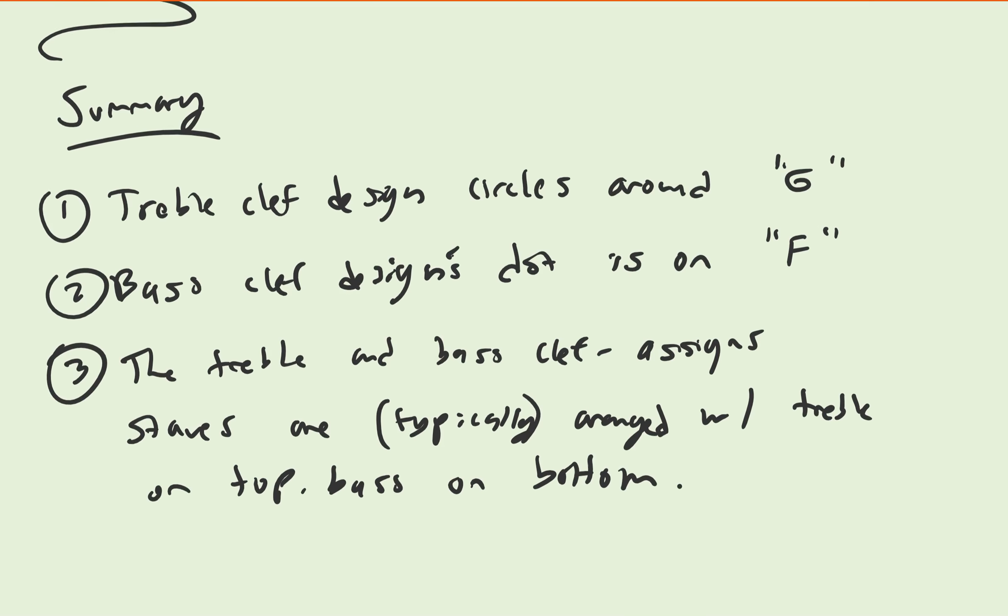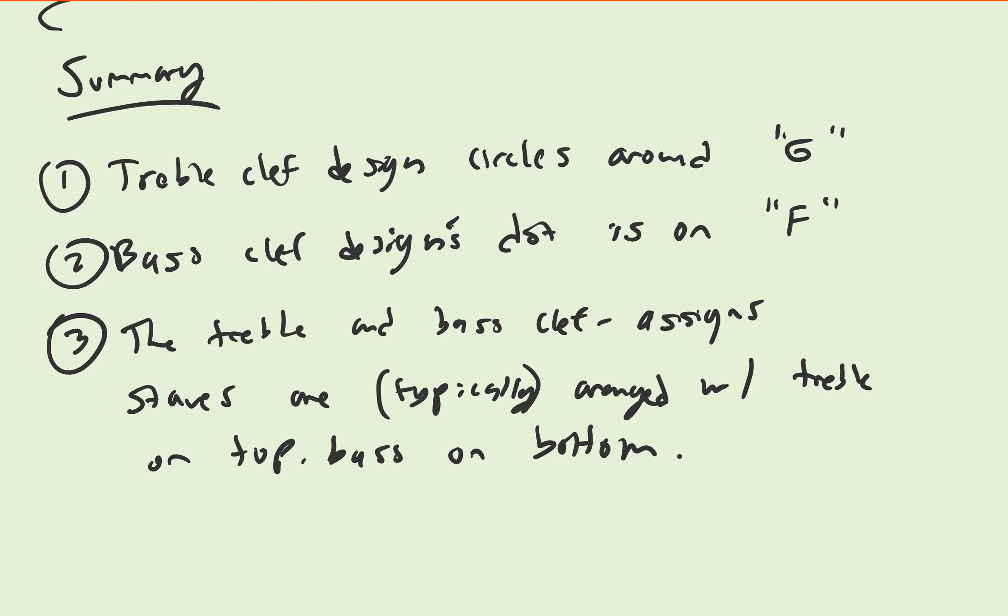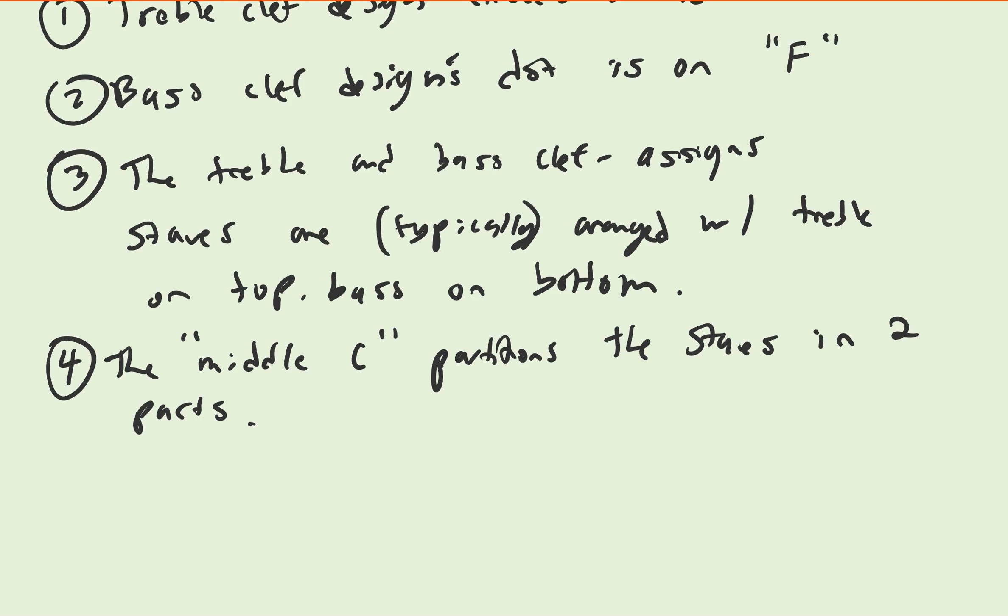Now, this is not always the case. Sometimes you see two treble clefs or two bass clefs stacked on top of each other. It's perfectly normal, but not always necessary. And what we call the middle C partitions the staves into two parts. Typically, treble clef on top, middle C in the middle, bass clef underneath that.